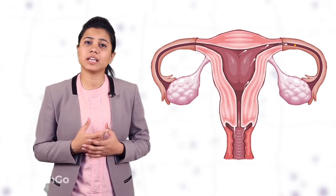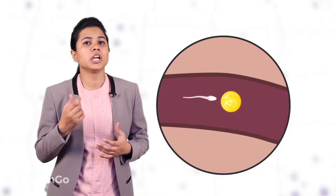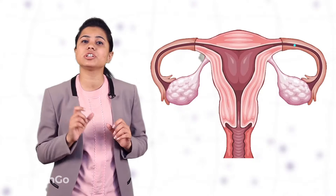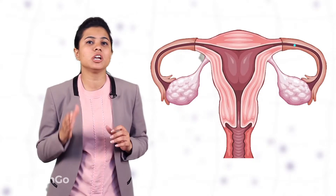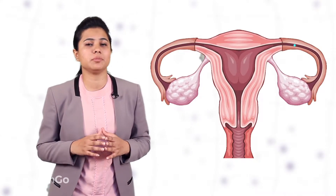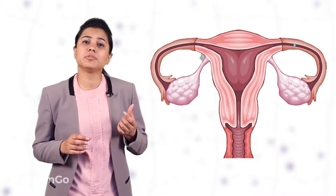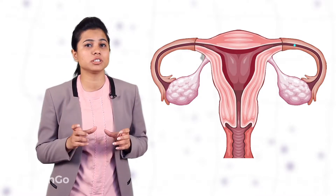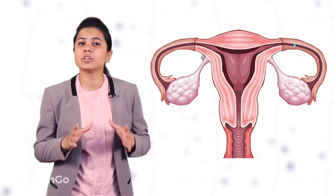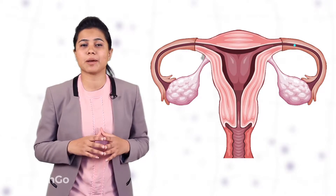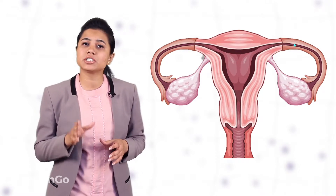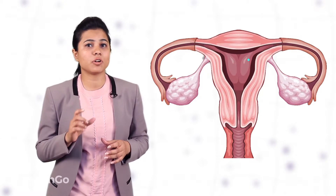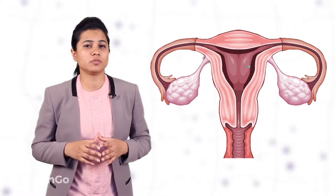If the released egg fuses with the sperm, it could lead to the formation of a zygote, and in that case the uterus must be ready to receive and nurture the embryo. For this reason, before ovulation, the inner lining of the uterus becomes thick and soft with a lot of blood capillaries. If fertilization occurs, the zygote formed will implant itself on the inner lining of the uterus.